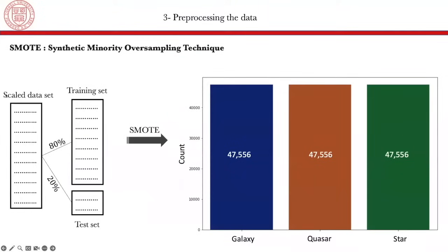So in my case, I started by scaling the data first and then I split the data into 80% for training and 20% for testing. And then I applied the SMOTE algorithm. And here is the final number of my training set. So we have about 47,000 points for each class.